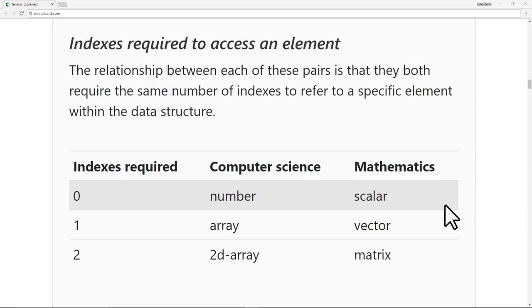When we move to an array or a vector, we need one index to refer to a specific element. And then when we move to a 2D array or a matrix, we need two indices to refer to a specific element.